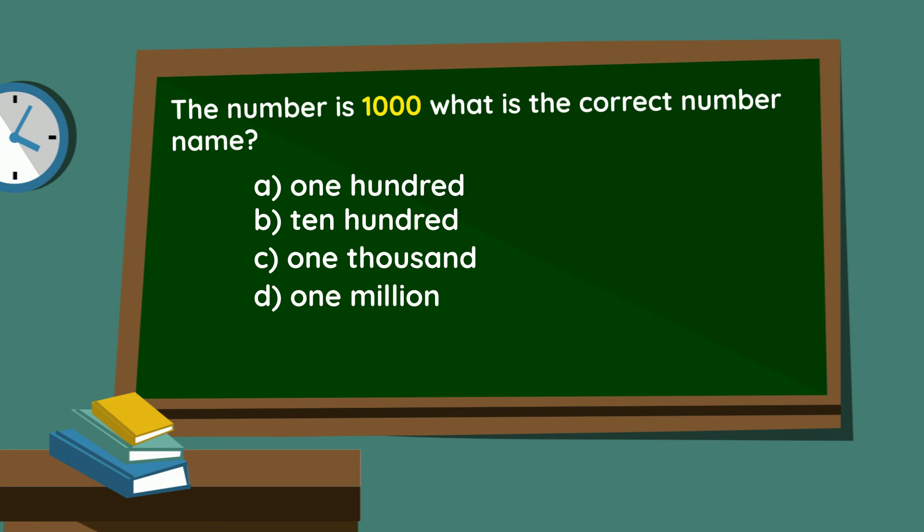Is it A one hundred, B one hundred, C one thousand or D one million? That's right! The answer is C, one thousand.